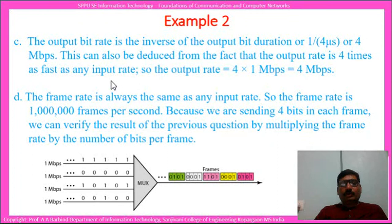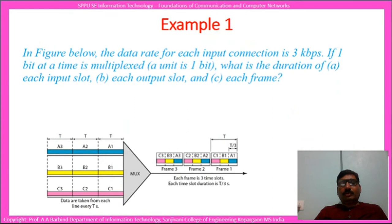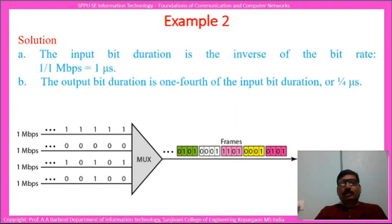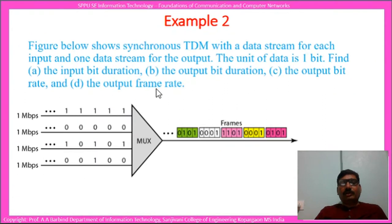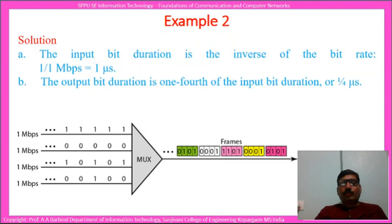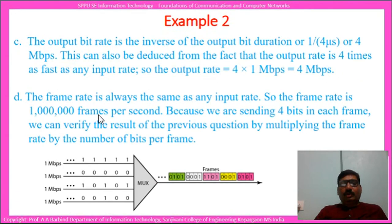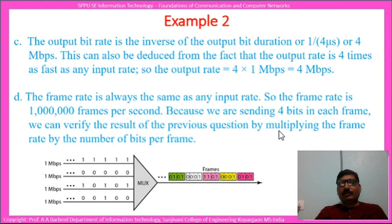The output frame rate is always the same as the input rate, which is 1 lakh (100,000) frames per second, since we are sending 4 bits in each frame. We can verify this by multiplying the frame rate by the number of bits per frame: 100,000 × 4 = 4 megabits per second, which matches the output bit rate.